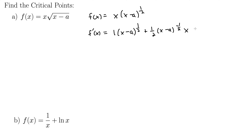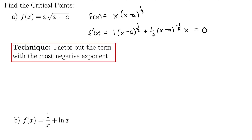We want to set this equal to zero and solve it. The calculus is done, but the algebra can be quite involved when it comes to the applications of derivatives. There's a certain technique that often comes in handy: factor out the term with the most negative exponent. I'll show that technique and also a method using least common denominators so you can see both ways.